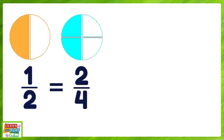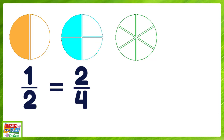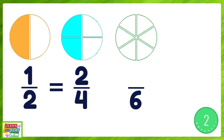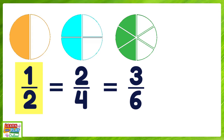Let's try and find another equivalent fraction. We can take the same circle, but this time let's cut it into six equal parts. This means that the denominator is six as there are six equal parts altogether. How many parts would we need to shade to make it equivalent to one half or two quarters? We would need to shade three parts. If we shade three parts, that would make it equivalent to one half, as well as two quarters, because they all represent the same amount shaded.